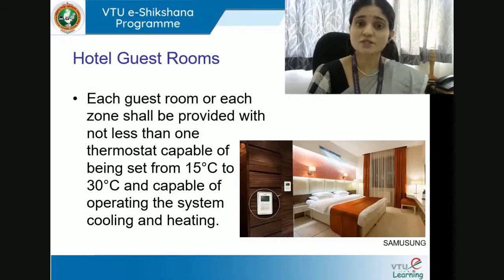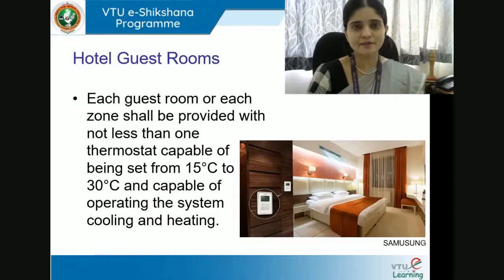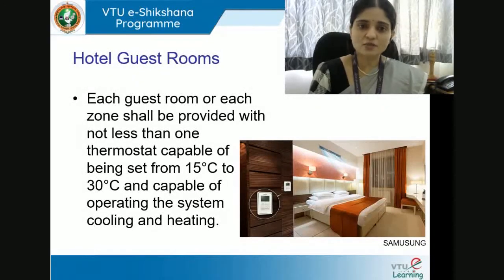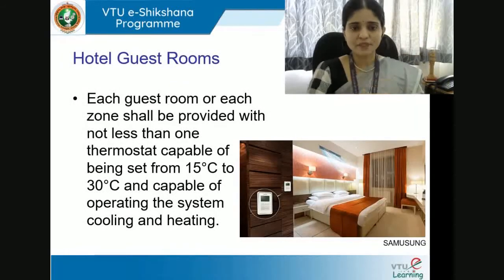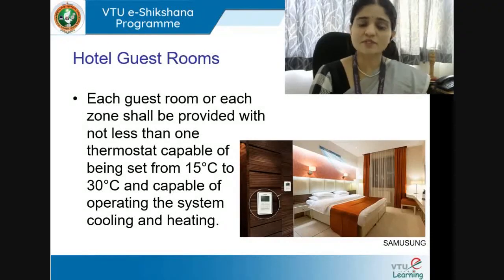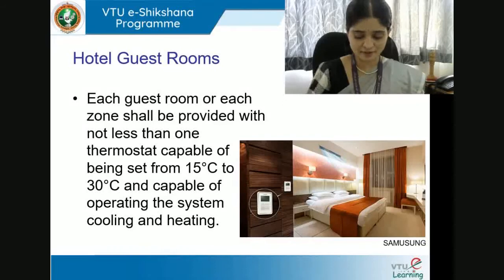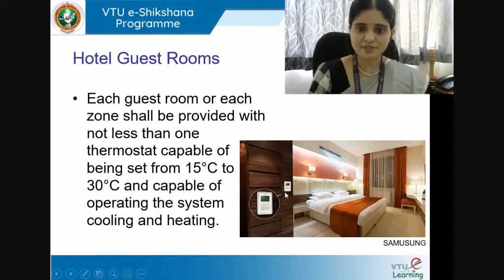Each guest room or zone — a zone being a group of guest rooms with similar HVAC calibrations — shall be provided with not less than one thermostat capable of being set between 15°C and 30°C, and capable of operating the system with respect to both cooling and heating. The thermostat is normally located on the wall.